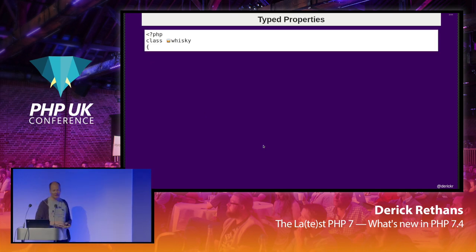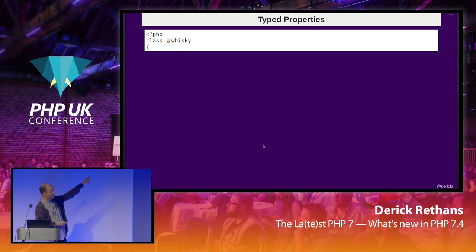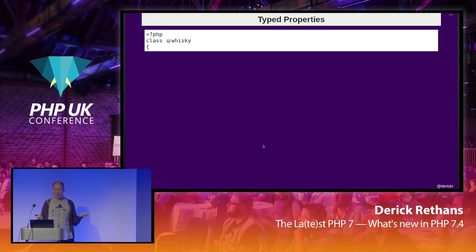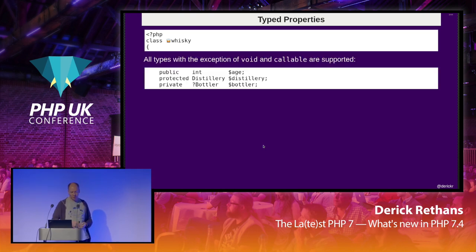So what is the biggest thing in PHP 7.4? It is typed properties. You know how I said that I like whiskey? So that's my example. I also like using emojis in my class names. I wouldn't recommend you do that in production code, but it at least puts some color to the slides. Properties you could already have in PHP 7, PHP 5, or even PHP 4. But what you can now do in 7.4 is add a type to it, which is new and pretty cool.